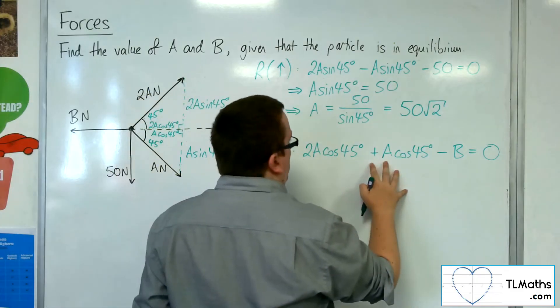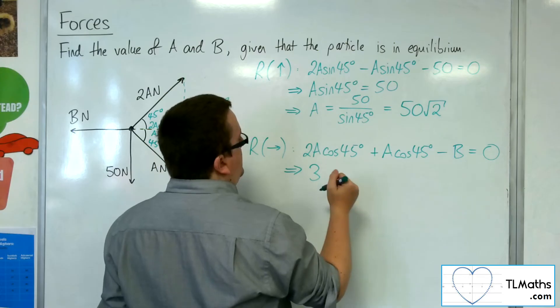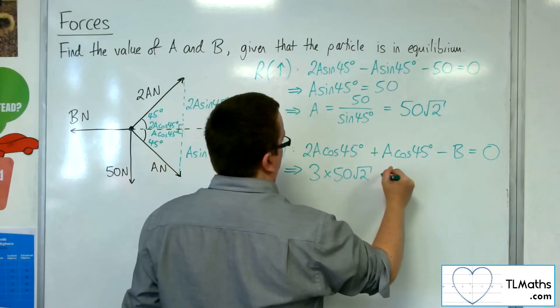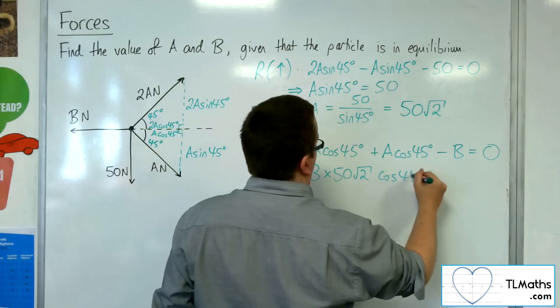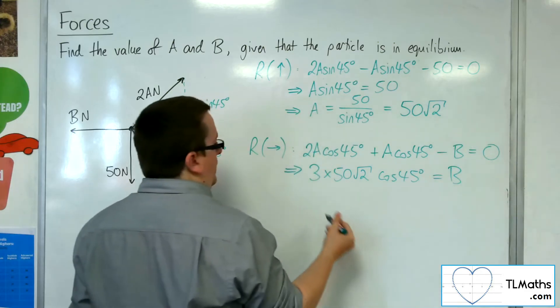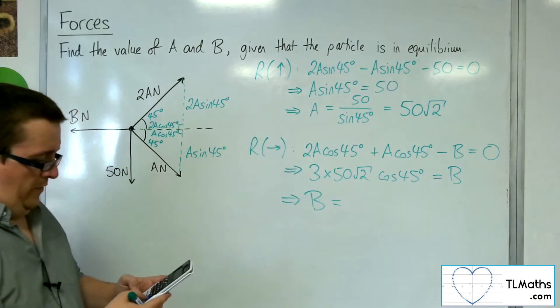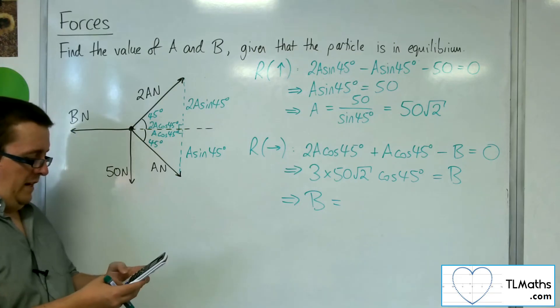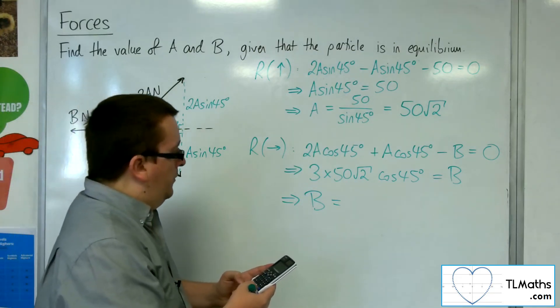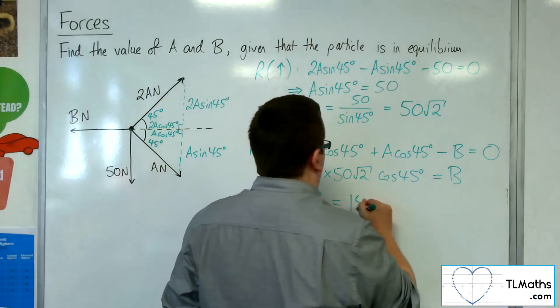Now, that means I've got 3A cos 45, and I know that A is 50 root 2. And that's going to be equal to B, adding the B to both sides. So we've got 3 lots of 50 times root 2 times cos of 45. And that gets me 150.